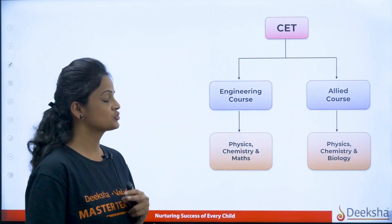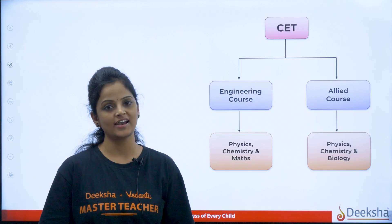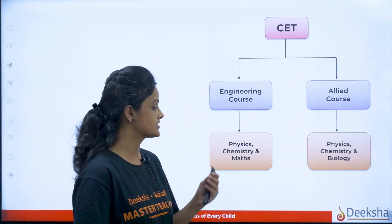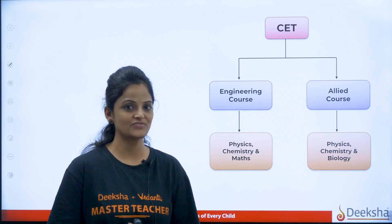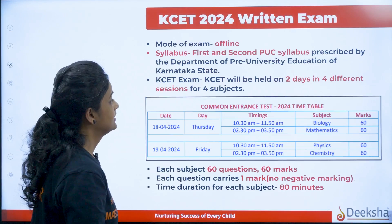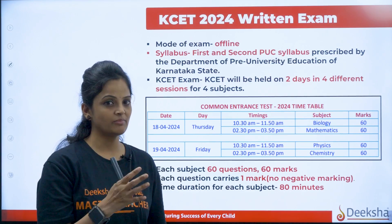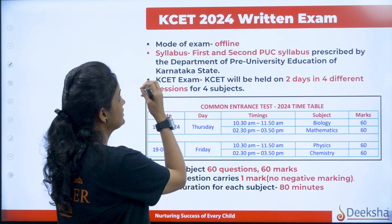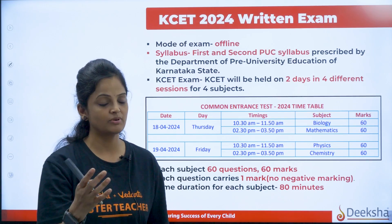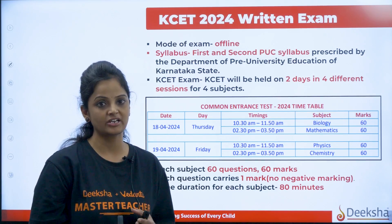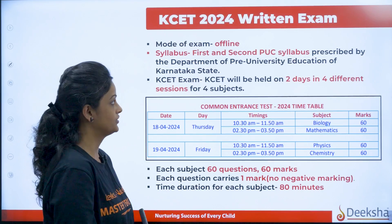In KCET, there will be two major courses: engineering course and allied courses. In engineering courses, physics, chemistry, and mathematics will be there. And in allied courses, physics, chemistry, and biology will be. The exam will be offline and the syllabus will be from your NCERT syllabus — complete first PUC and second PUC prescribed government textbook, you have to refer to that.